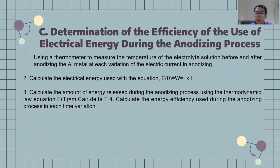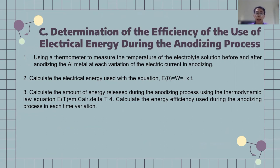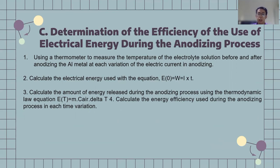The last step is to determine the efficiency of the electrical energy used during the anodizing process. First, use a thermometer to measure the temperature of the electrolyte solution before and after anodizing at each variation of the electric current. Then calculate the electrical energy used using the relevant equation, calculate the amount of energy released during the anodizing process using the thermodynamic law equation, and calculate the energy efficiency at each time variation.